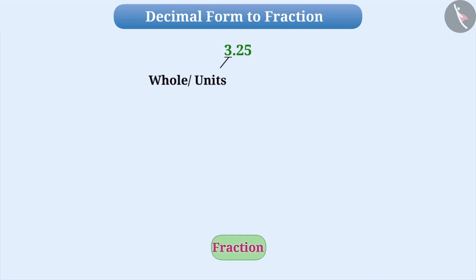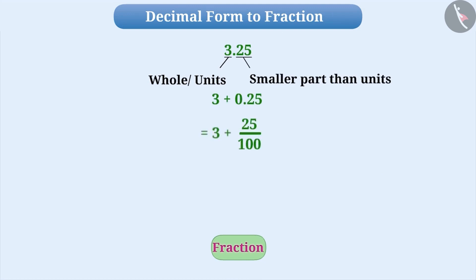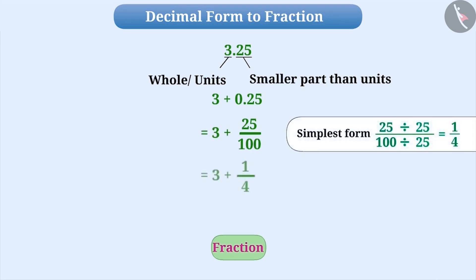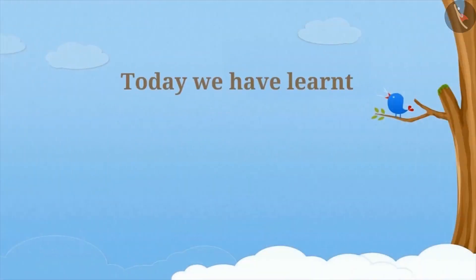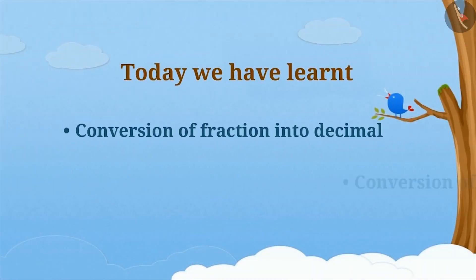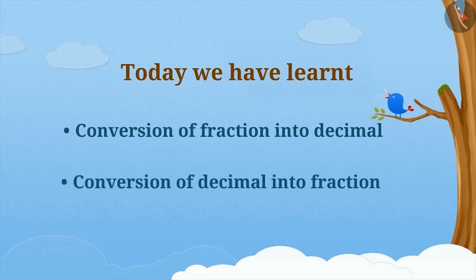In mathematics, to represent any decimal number in fractional form, we separate the whole part and the parts smaller than units. Then we represent the parts smaller than units in fractional form, find the simplest form of this fraction, and finally write the whole part along with that fractional part. In the next video, we will learn representation of decimal numbers on the number line.